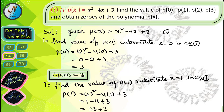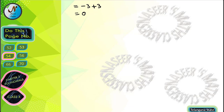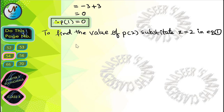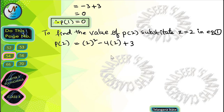After simplification, 1 - 4 = -3, and -3 + 3 = 0. So -3 + 3 cancel out and we get 0. Therefore p(1) = 0. Next, to find the value of p(2), substitute x = 2 in equation 1.